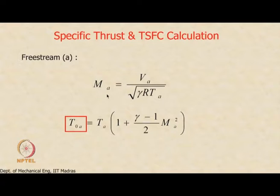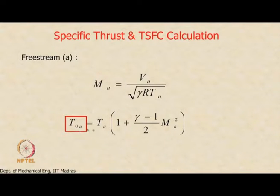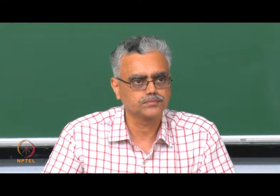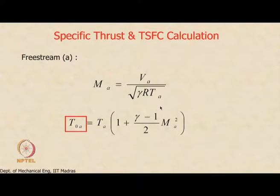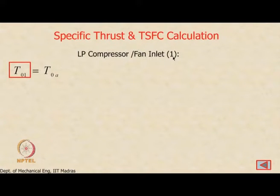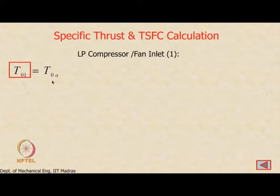At the free stream state, Va, Pa, and Ta are known. From Va and Ta we calculate the free stream Mach number and then stagnation temperature T0,a. At the intake exit (state 1), there is no energy addition or work exchange, so stagnation temperature is constant: T0,1 equals T0,a. We need to calculate P0,1 next.